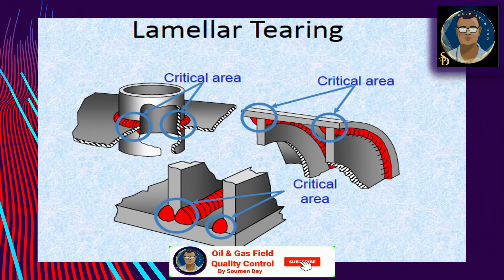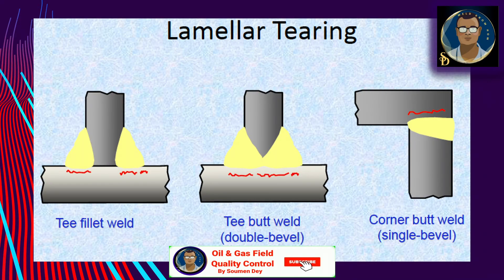Lamellar tearing occurs only in rolled steel products, primarily plates. Its main distinguishing feature is that the cracking has a terraced appearance. Cracking occurs in joints where thermal contraction strain acts in the through-thickness direction of the steel plate. Non-metallic inclusions are present as very thin platelets with their principal planes parallel to the plate surface — it is a planar defect, which is why it is called lamellar tearing. Contraction strain imposed on the planar non-metallic inclusions results in progressive decohesion, forming roughly rectangular holes — the horizontal parts of the cracking parallel to the plate surface. With further strain, the vertical parts of the cracking are produced, generally by ductile shear cracking.